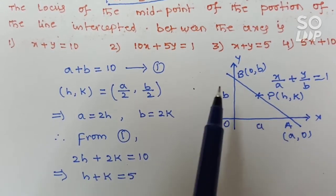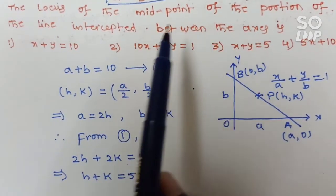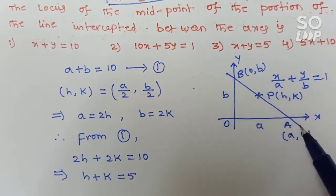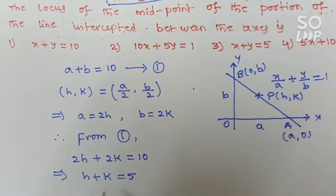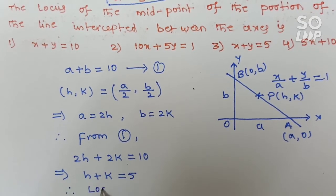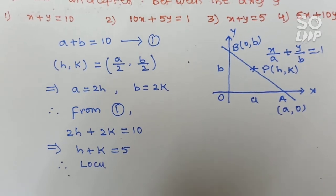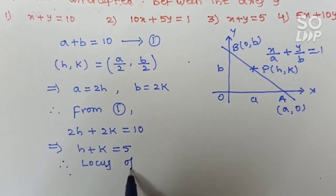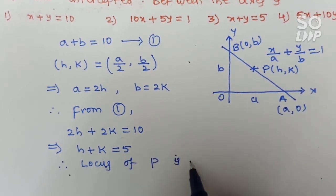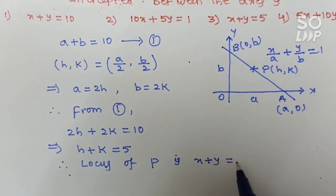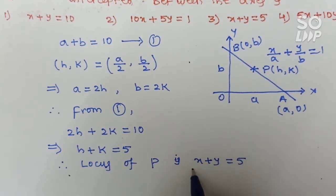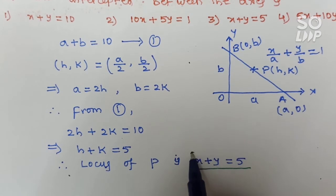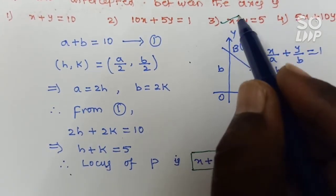Now find the locus of midpoint P. Replace H by x and K by y, because H is the x-coordinate and K is the y-coordinate. So x plus y equals 5 is the answer. The third option is the correct answer.